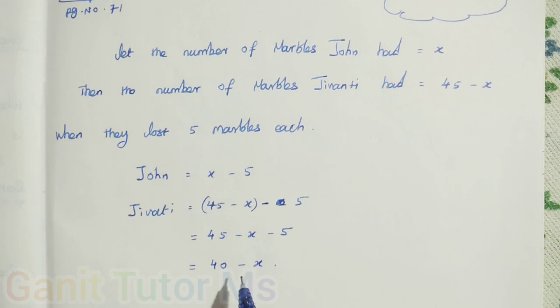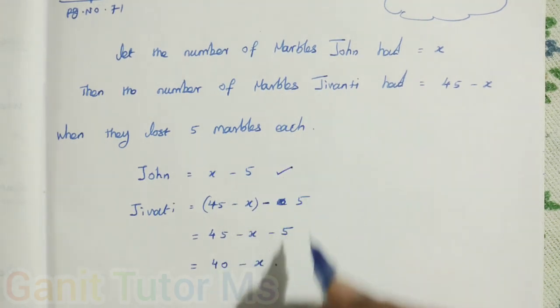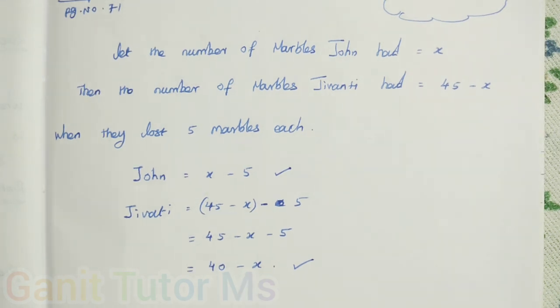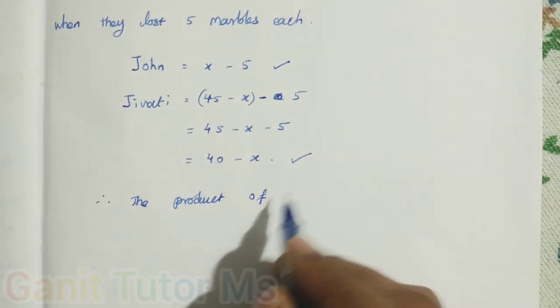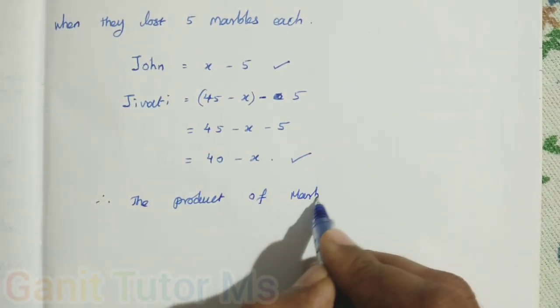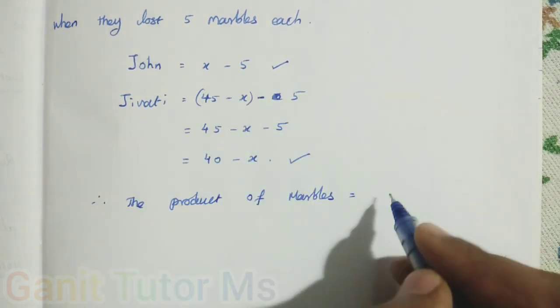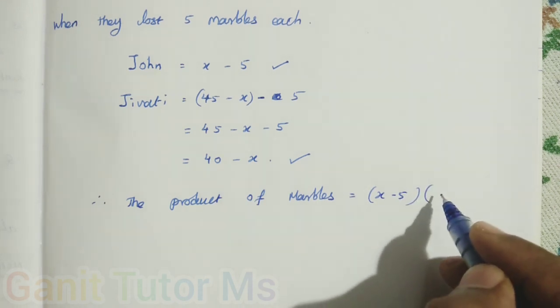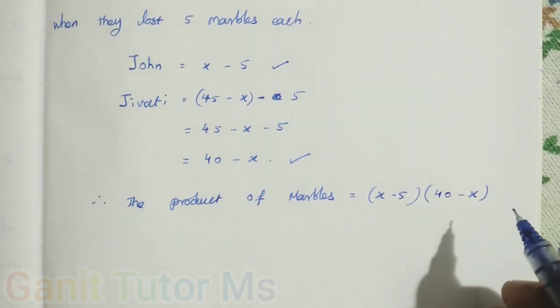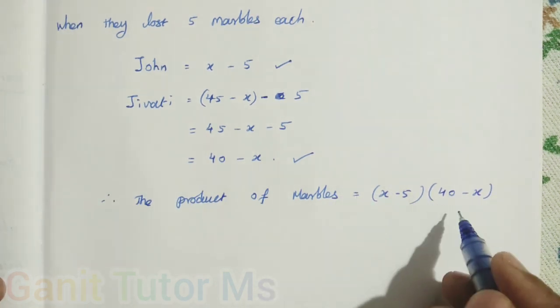Now they have John x minus 5, Jivanti 40 minus x. So the product of marbles: they given since the product, John have x minus 5 into Jivanti, that is 40 minus x. Now it is a product, so you can use distributive property to multiply.